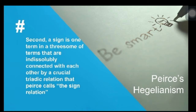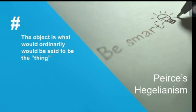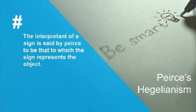Second, a sign is one term in a threesome of terms that are indissolubly connected by a crucial triadic relation that Peirce calls the sign relation. The sign, or the representament, means something — it is the one who represents something. To understand the sign relation, we must understand the other two terms: the object and the interpretant. The object is what would ordinarily be said to be the thing — the one who signifies what the sign is a sign of. The word 'dog,' the word 'human,' or even your name and birthdays can be considered objects.